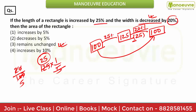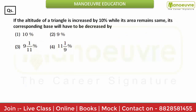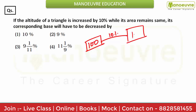Next question: if the altitude of a triangle is increased by 10 percent while its area remains the same, its corresponding base will have to decrease by how much? Take the initial value as 100. Altitude means height — increase it by 10 percent — so height becomes 110. Now I have to keep the area the same.